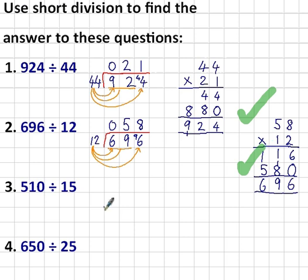Next question, 510 divided by 15. Make some space for that. 510 divided by 15, or how many 15s go into 510? 15 into 5 doesn't go, so I'll put a 0 at the top. But 15 into 51 does go. It goes in 3 times. So I'll put a 3 up there. 3 times 15 is 45.